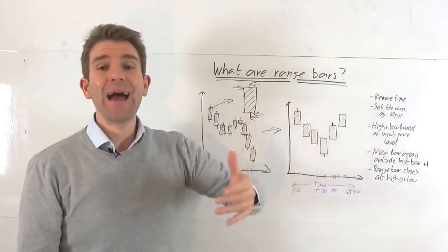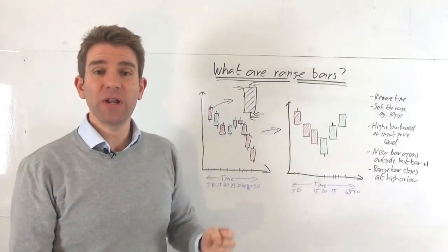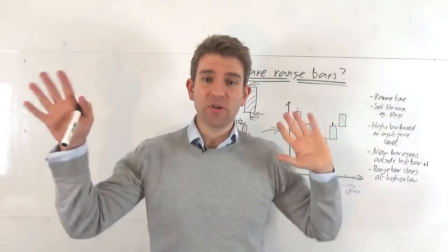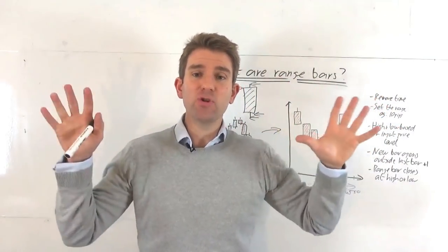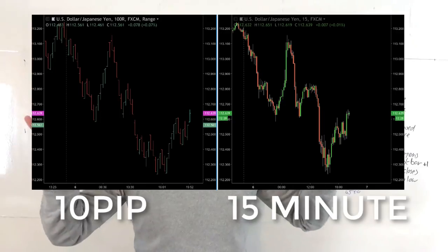So removing time can remove noise, it can make things clearer for you. What I'll do now is I'll stick up a couple of charts on each side with exactly the same instrument. But what we'll do is use a 10 pip range bar on one and we'll use a time chart on the other and you can see the difference in the two.